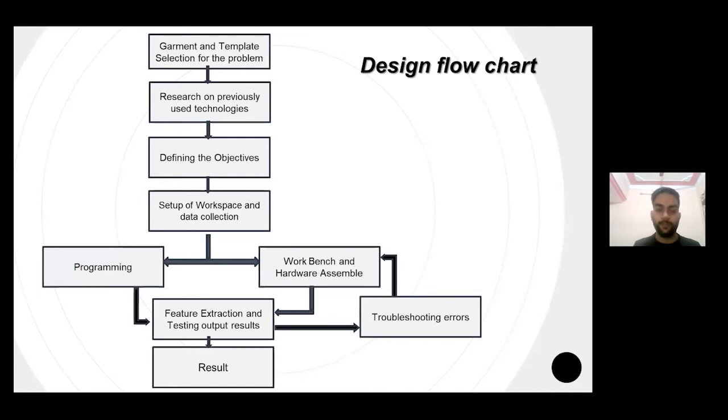Starting with the garment and template selection problem, the research phase comprises a selection of target group and research about current development ideas that have already been implemented and newer ideas that can be used. Then comes the design and development phase where we plan how hardware and software will be implemented.